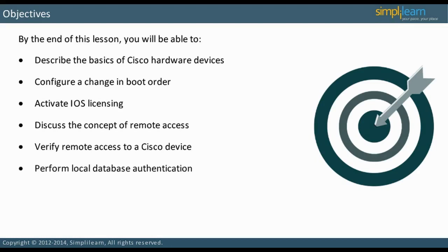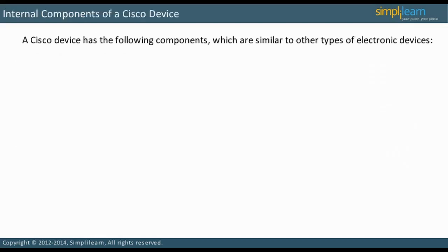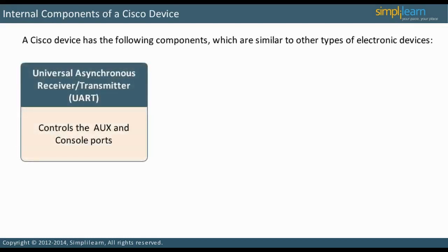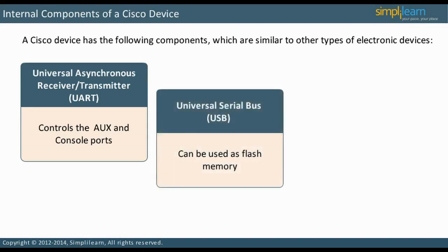In this course so far, we have discussed software processing. Let us look into Cisco hardware. A Cisco device has components similar to other types of electronic devices. It has a universal asynchronous receiver transmitter, UART, which controls the AUX and console ports. There may be one or two universal serial bus, USB, ports, which may be used as flash memory.